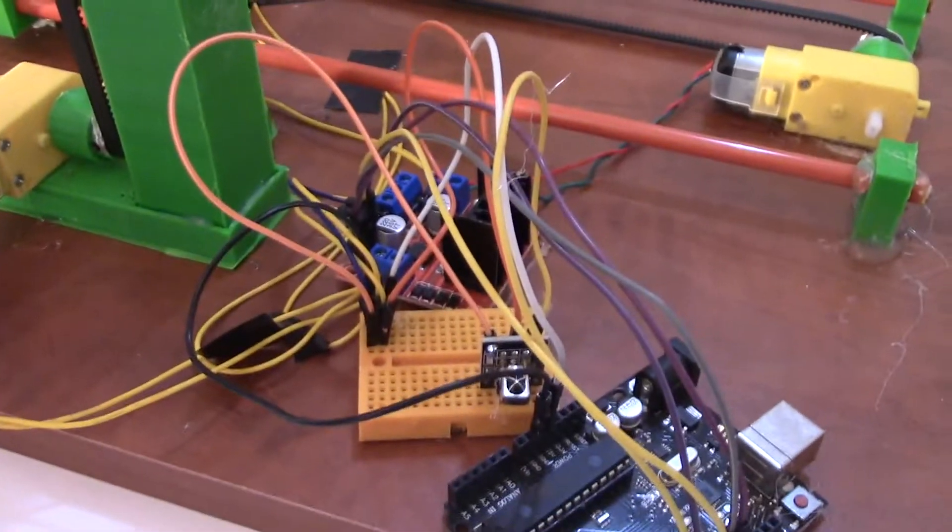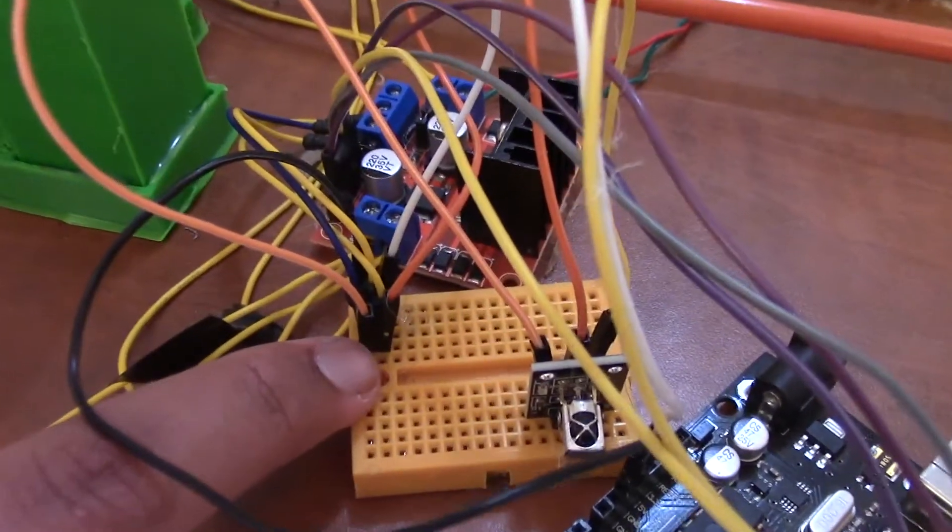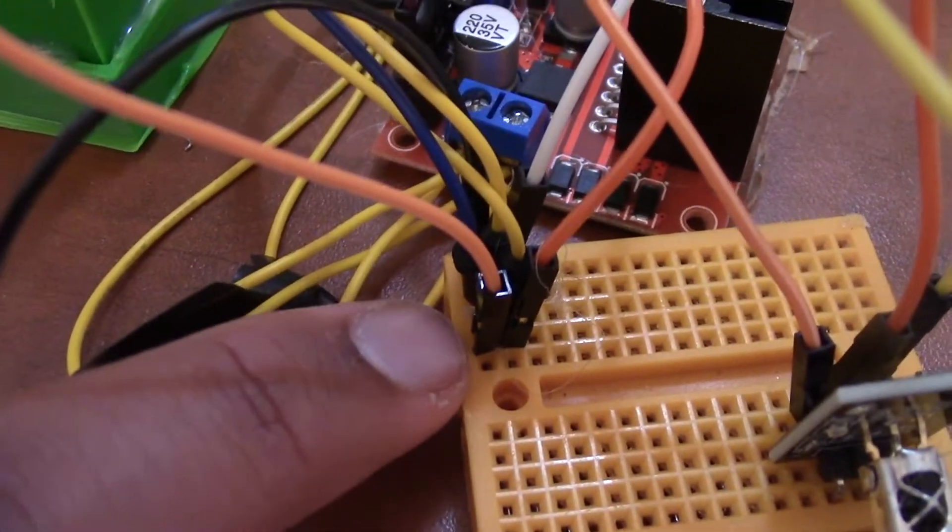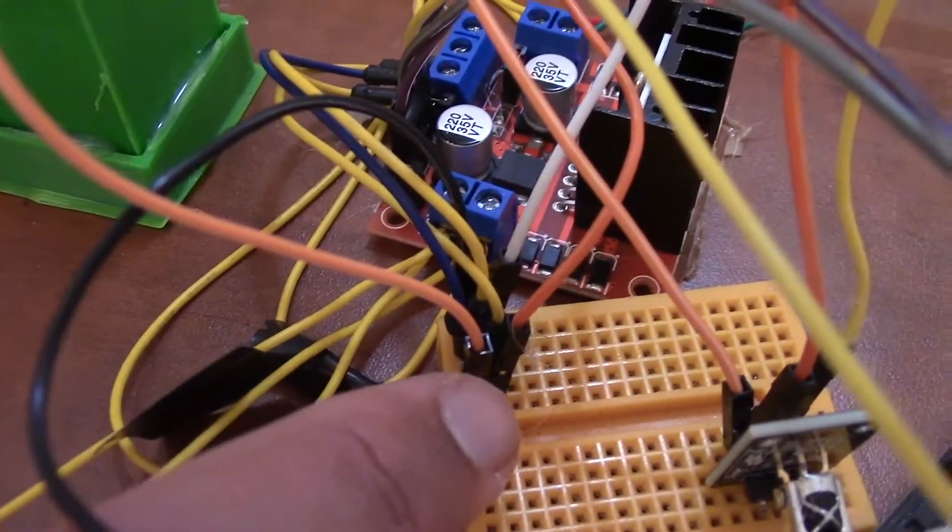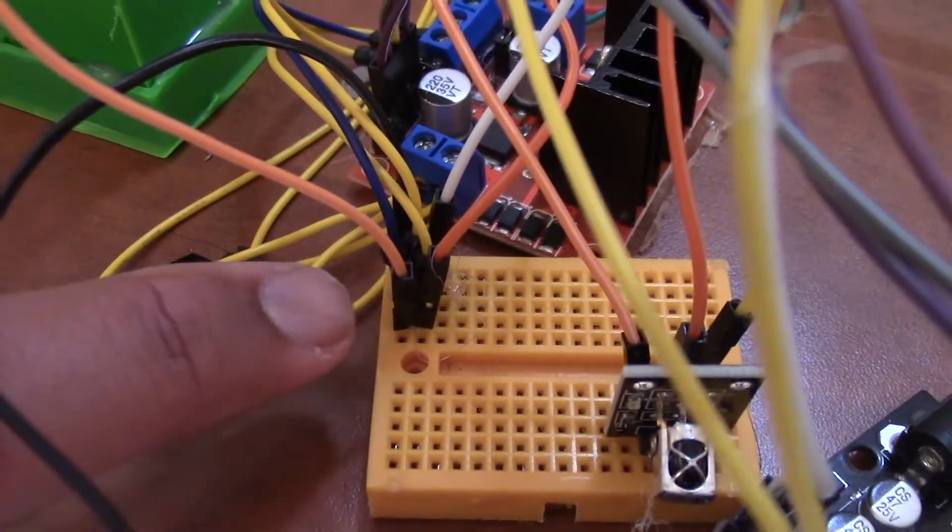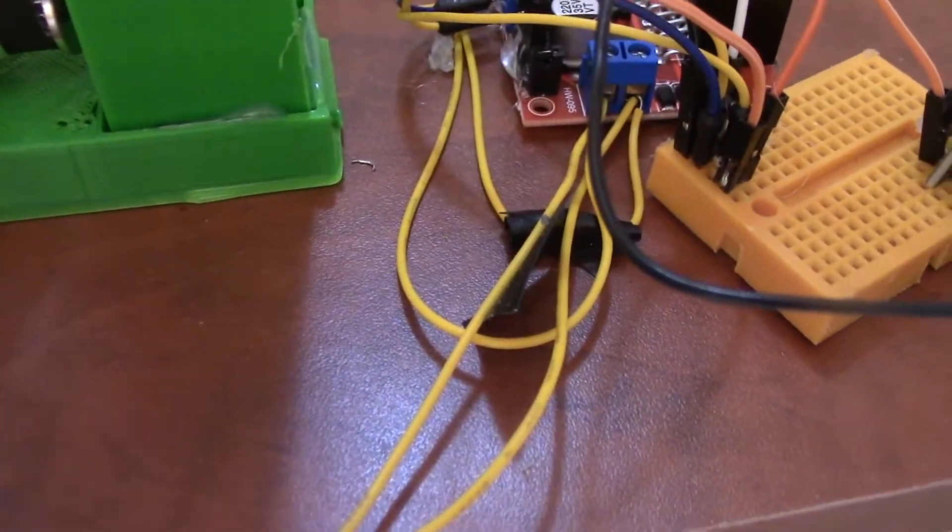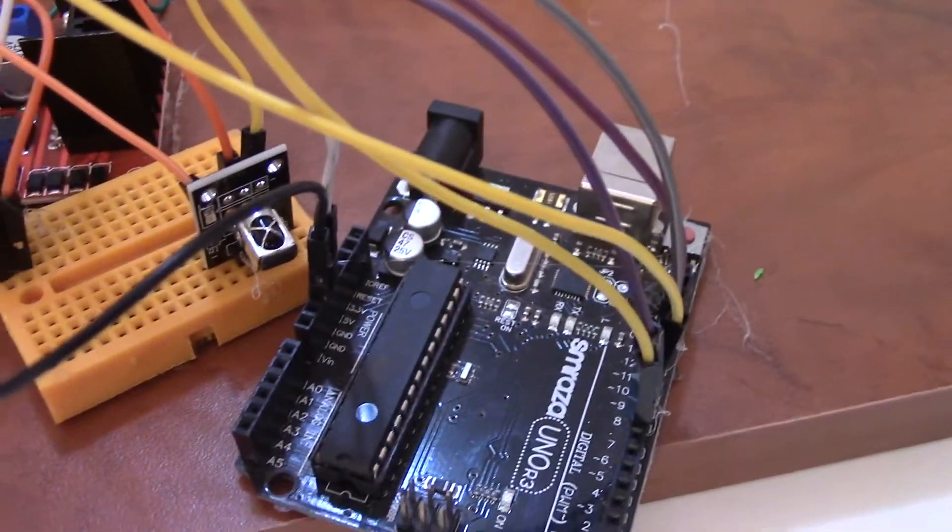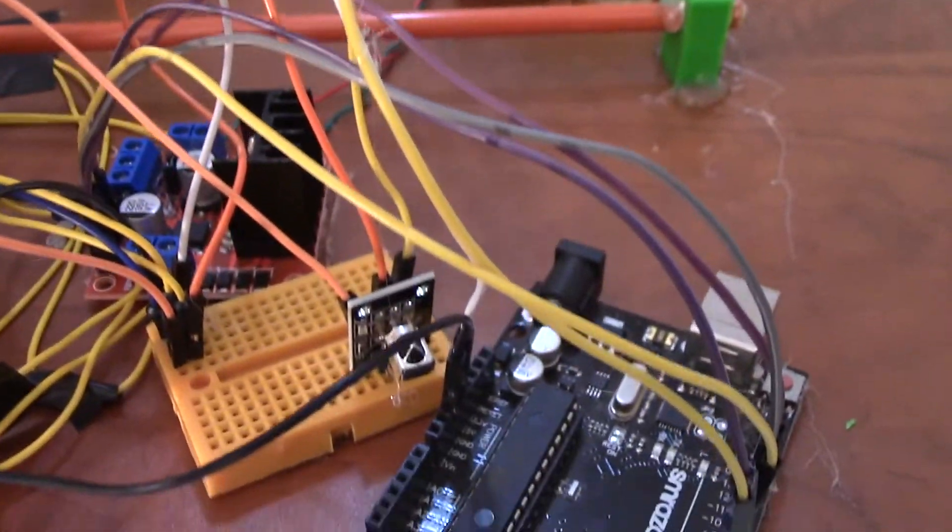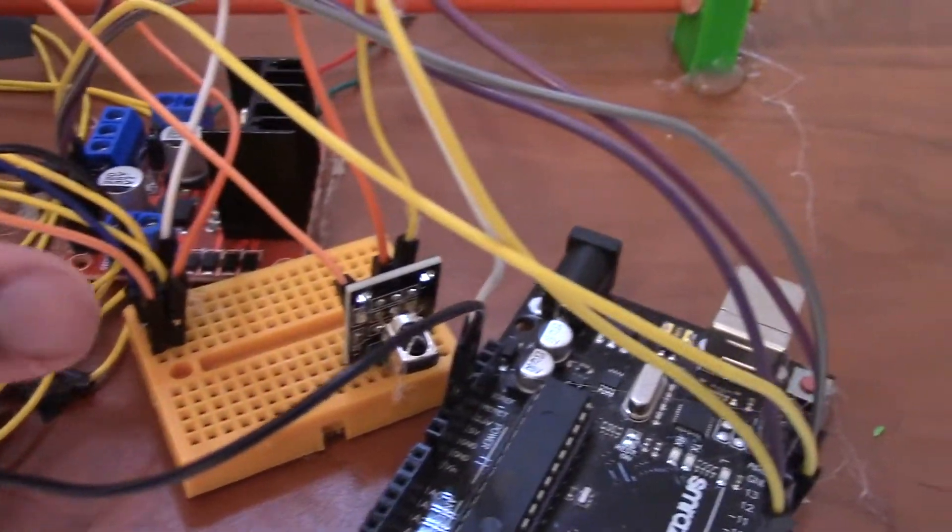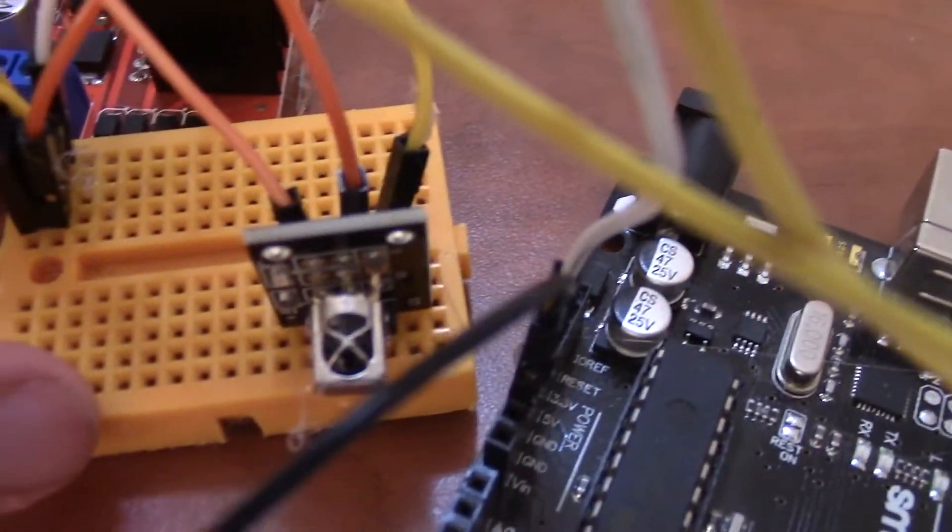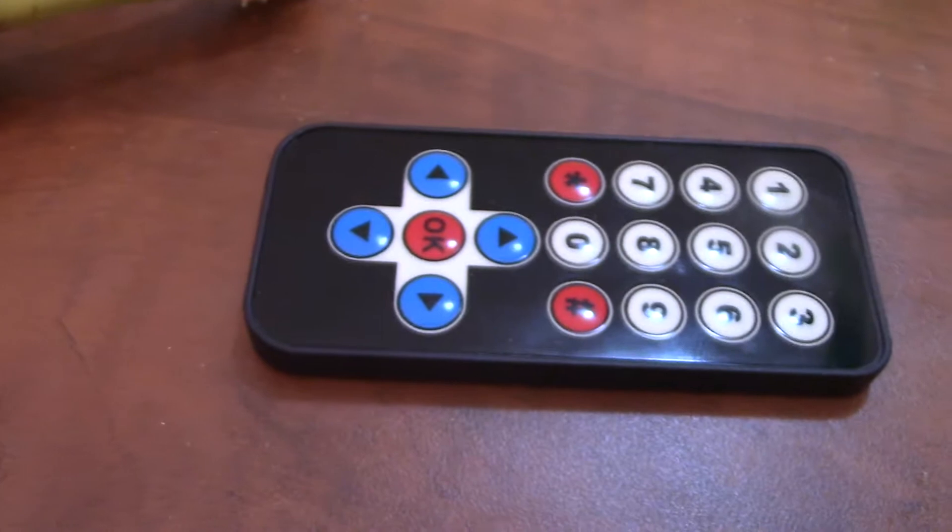That's it for the L298N motor driver shield. Over here you see this bunch of wires - on the left rail this is all the GNDs, and the right side is all the five volts. On the left side there's three wires: one is going from the Arduino's GND to power this rail, the other two are from the IR receiver which is over here, which is controlling the whole thing. So clicking one on this remote makes the whole thing cut bananas.